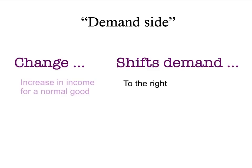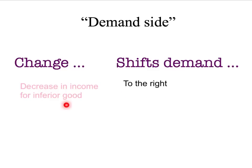Demand will also change if there's a change in income. If we have a normal good — where the amount people want to buy at any price rises when income rises — then an increase in income means that demand for the normal good shifts to the right. Similarly, if we have an inferior good, a decrease in income will shift the demand curve for the inferior good to the right. As your income goes down, you'll buy more of the inferior good — it might be second-hand clothing, cheap fast food — by definition, as your income falls, your demand for the inferior good shifts to the right.